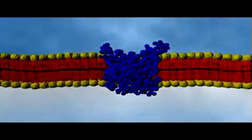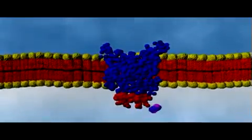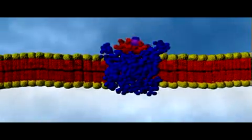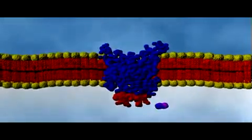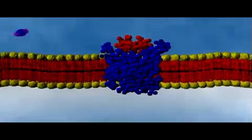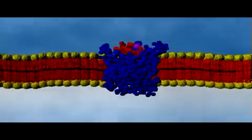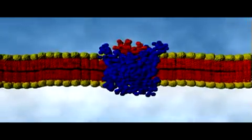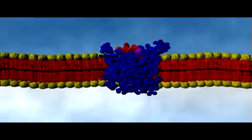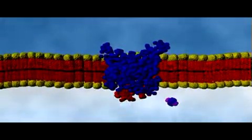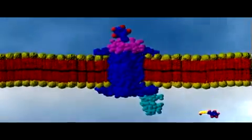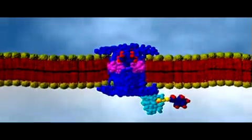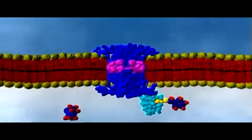Carrier proteins attach to specific molecules in the cytoplasm or extracellular fluid. The attachment triggers changes in the shape of the carrier protein that allows the molecule to pass through the protein and thus cross the plasma membrane. Some carrier proteins don't use cellular energy and only allow ions and molecules through the membrane that would normally pass through as a result of diffusion. However, there are carrier proteins that use cellular energy to carry substances against the flow created by diffusion.